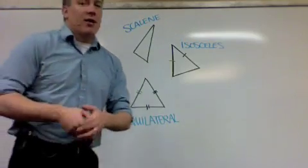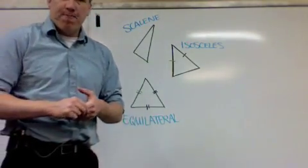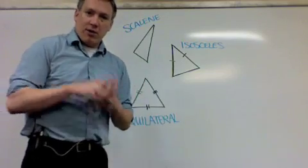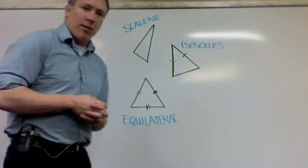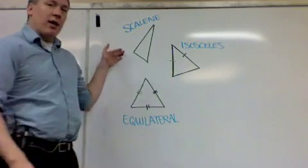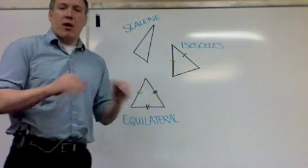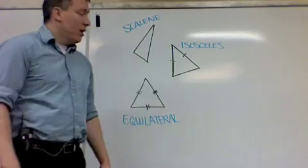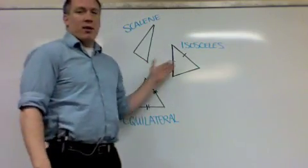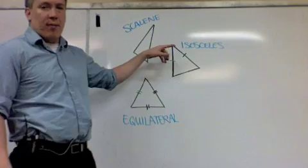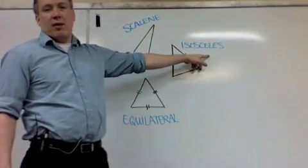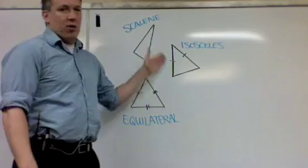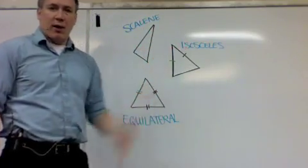The second classification comes by its sides, and there's three categories, also fairly simple. The first category is scalene. It just means none of the sides are congruent. All the sides are different lengths. The next kind is where only two of the three sides are the same, and this is called an isosceles triangle. It means that two of the sides are congruent or equal in length.